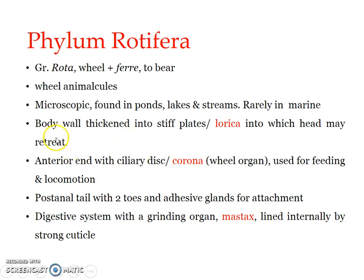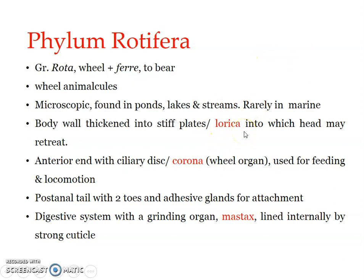The body is provided with a cuticle; the body wall is covered with a glycoprotein cuticle. This cuticular covering becomes hard and thick, forming a case referred to as a lorica. Sometimes it becomes thickened into stiff plates also referred to as lorica. Rotifers may be divided into two groups based on the presence or absence of lorica: those with lorica are called loricates, and those without are known as illoricates. In loricates, the head can usually retreat inside the lorica.